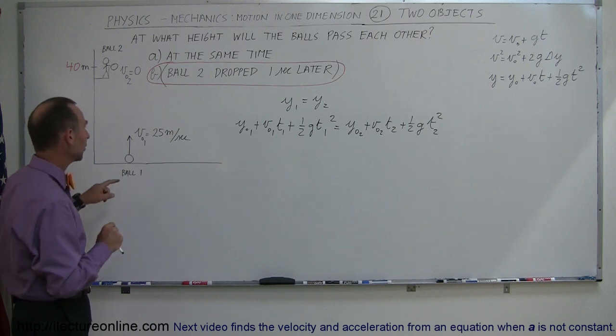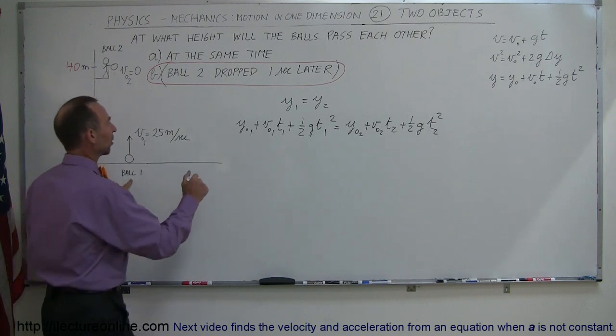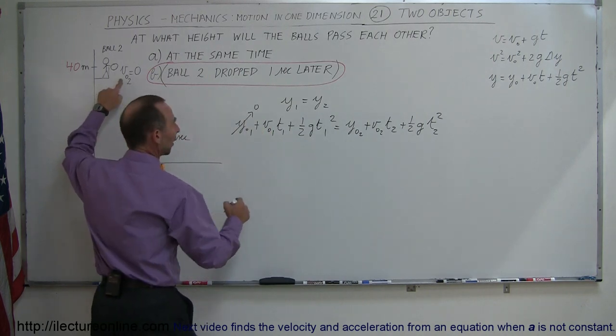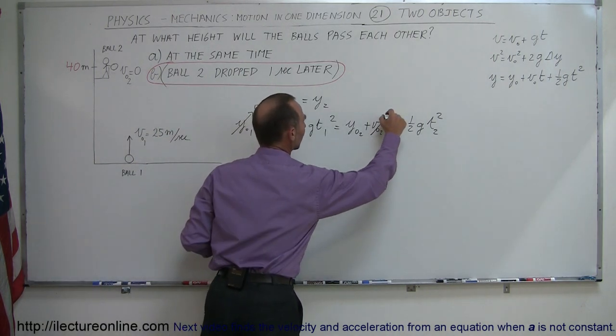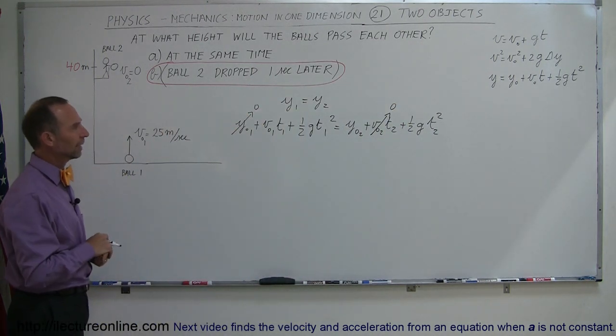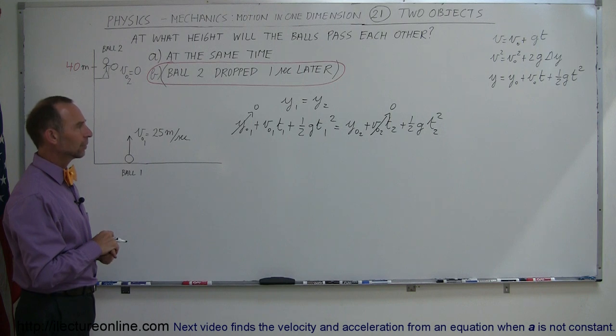But we can make things a little bit simpler. Ball 1 starts at 0 height, so this goes to 0. Ball 2 is dropped with initial velocity equal to 0, so that goes to 0. I think that's it, the rest is there, so now let's plug in some numbers.